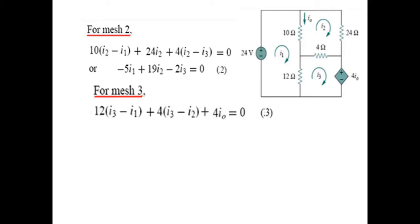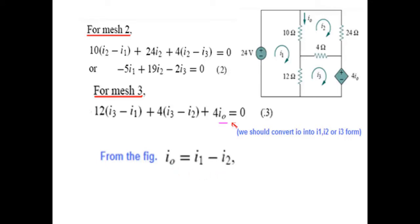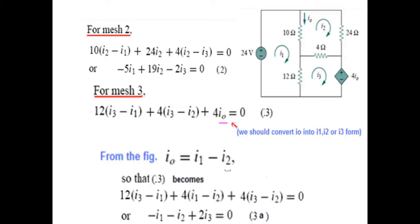In all other equations we have either I1, I2, or I3, but in this case there is also I0. We have to convert this in the form of I1, I2, or I3. Looking at the circuit, I0 is coming down, I1 is also coming down, but I2 is going up, so I0 equals I1 minus I2. We substitute this value into equation number 3, and by simplifying, we find the third equation.